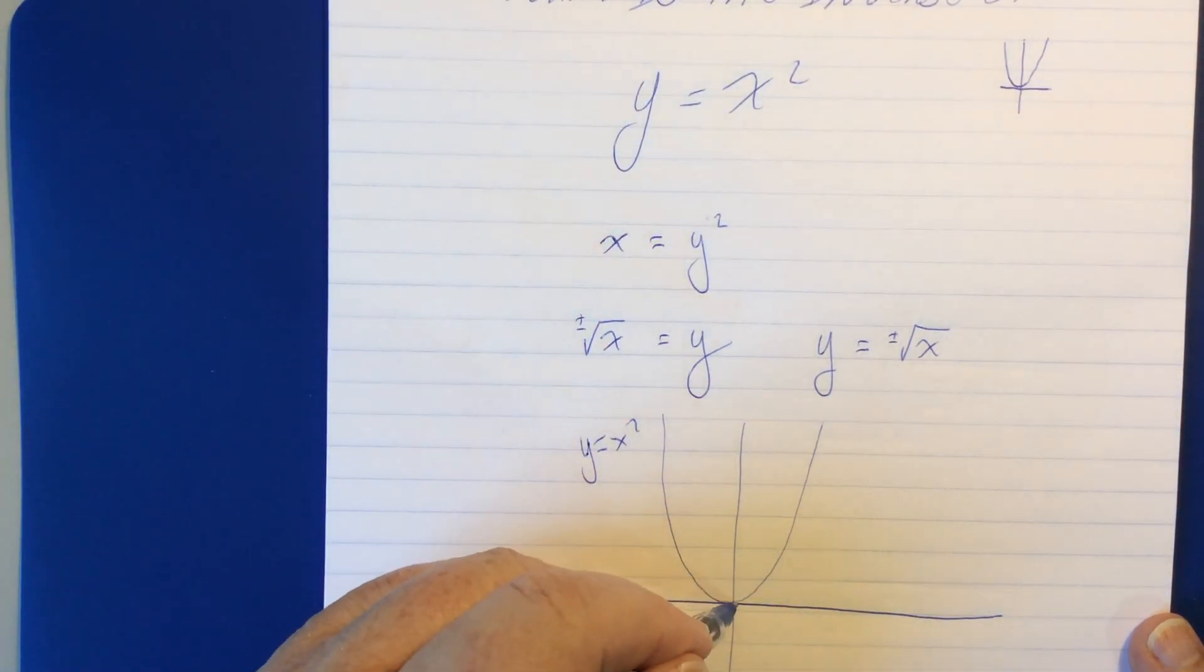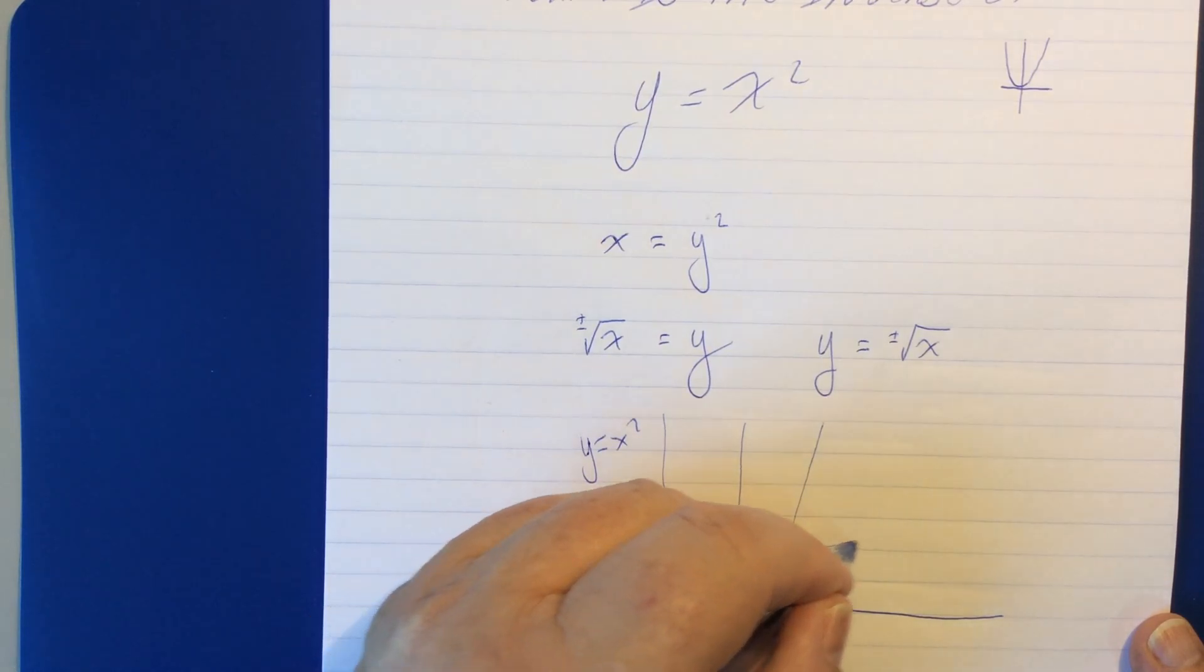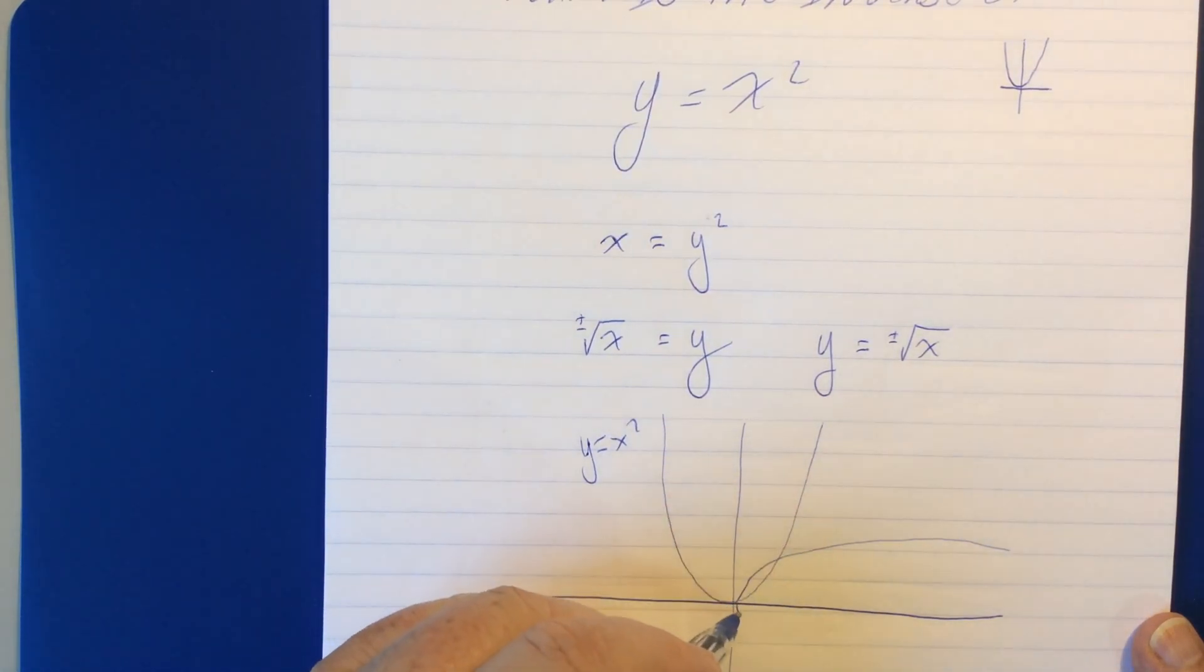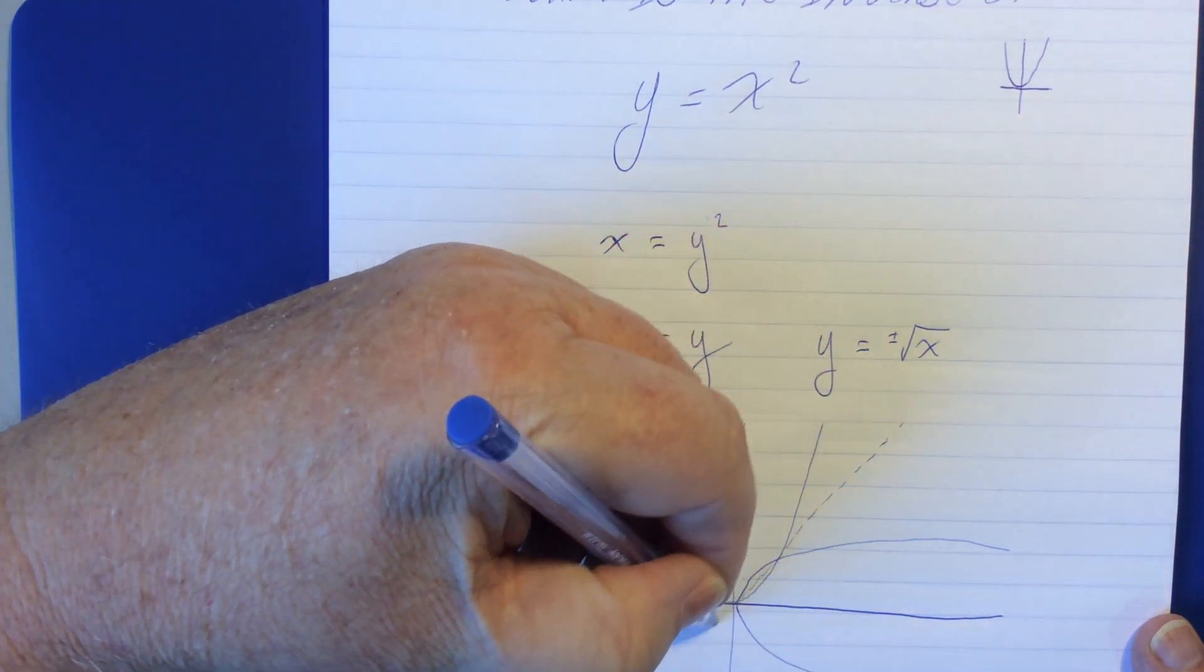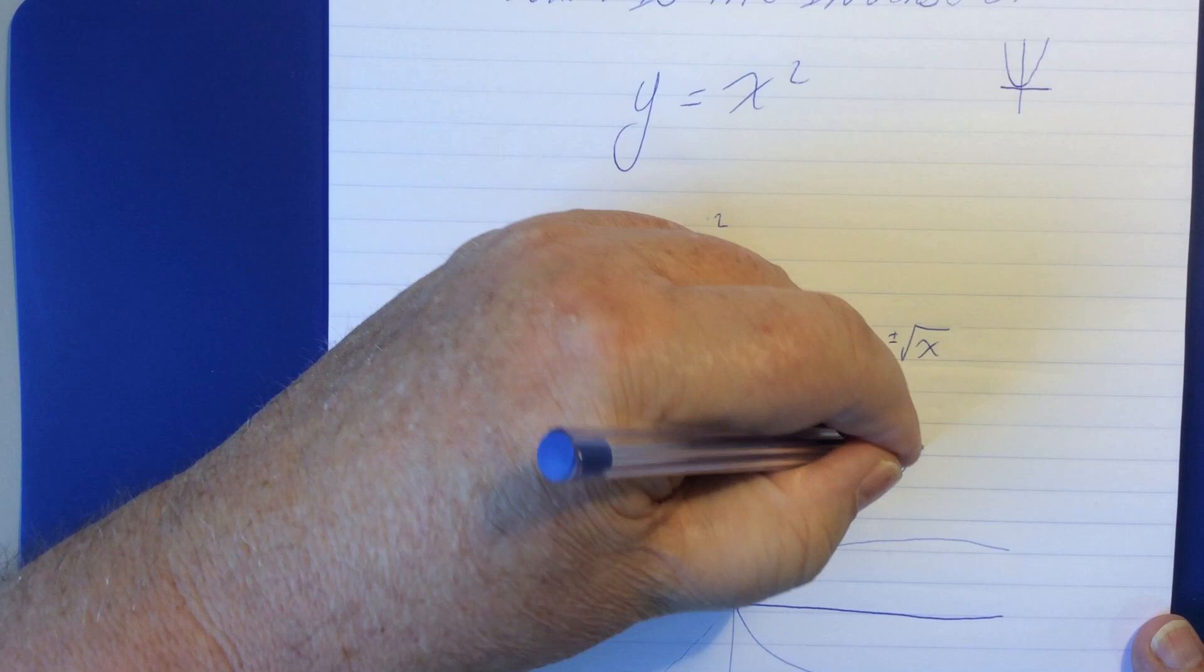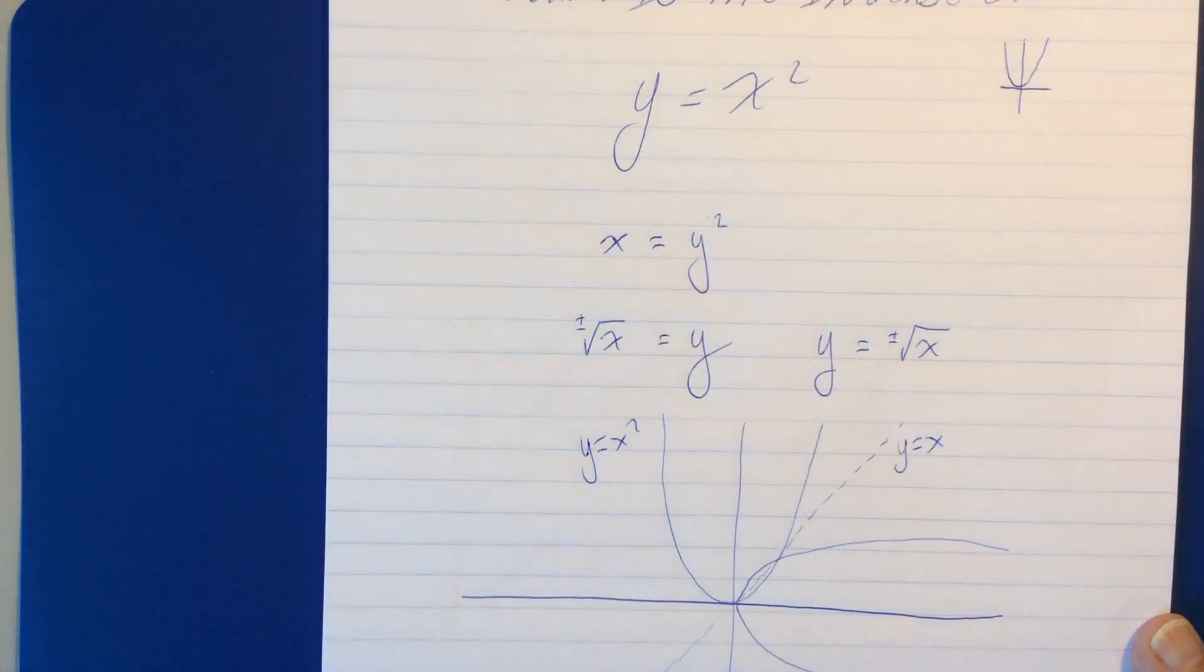And the new graph looks like this. And it is indeed a reflection in this line y equals x. And so, this point, for instance, has been moved to here. This point has been moved to here. This point has been moved over to here. And so forth.